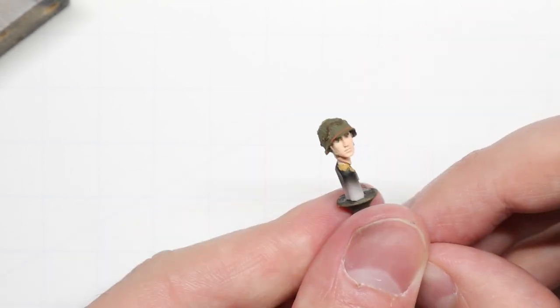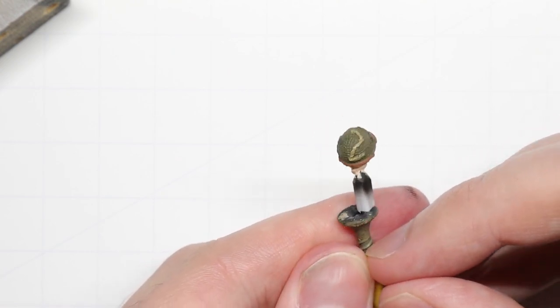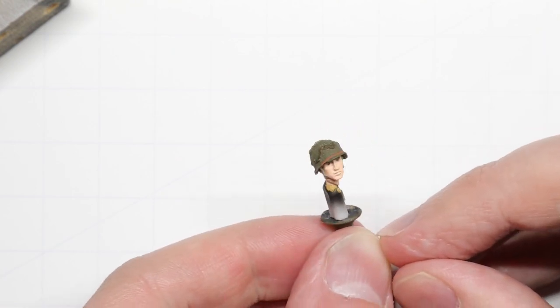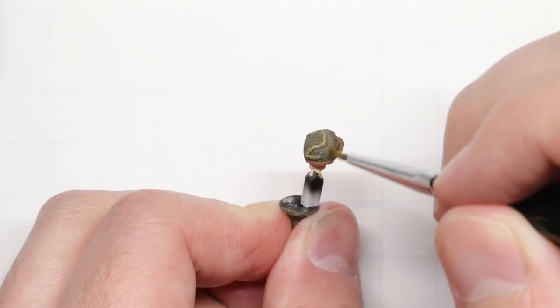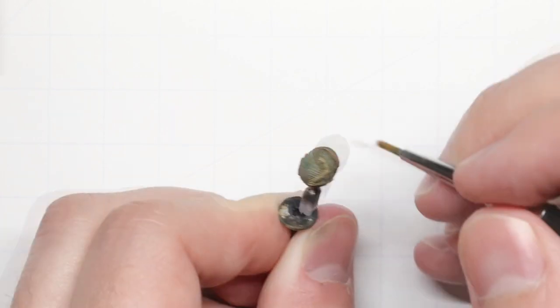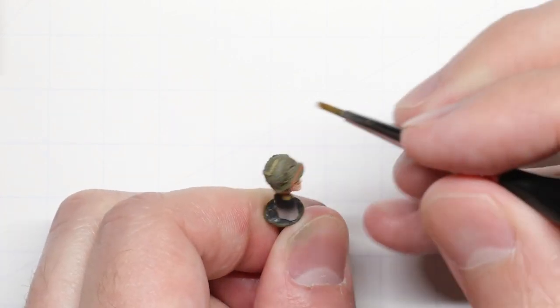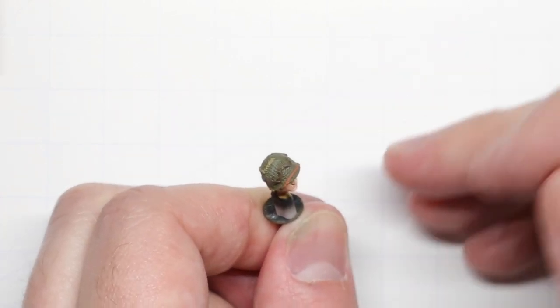With all those complete, we're going to hit our helmet with a little bit of dry brushing to help that netting stand out from all of the olive drab. I'm using the same green-gray we used for the inside helmet straps. Just load up your brush with some paint and then wipe most of it off on a paper towel so that when we paint here, only the highest surfaces of the helmet collect the paint itself.